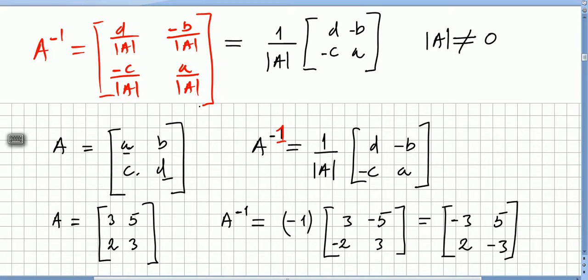In the previous videos we have been doing some exercises finding the inverse of a matrix A. We found an algorithm where to find the inverse of a matrix A with entries A, B, C, D, it is enough to take 1 over the determinant of A, then switch A and D and switch the sign for B and C.